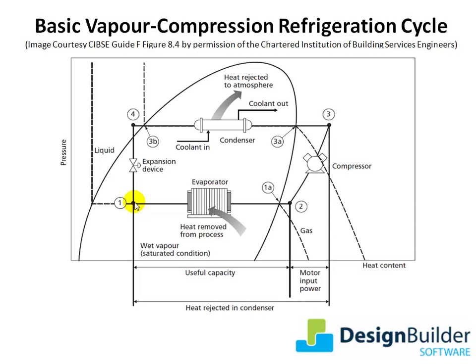In the chilled water loop, all these components may be included within the chiller. However, direct expansion systems such as split and packaged units may have these components in different locations, with the evaporator as the room terminal unit absorbing heat, and the condenser unit located externally rejecting heat to the outside air. This cycle may also be reversed in a heat pump to reject the heat of compression to the conditioned space.